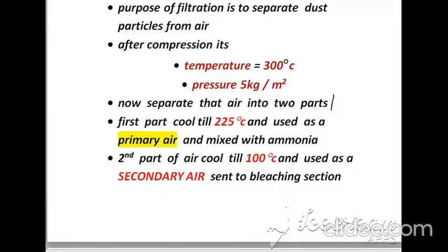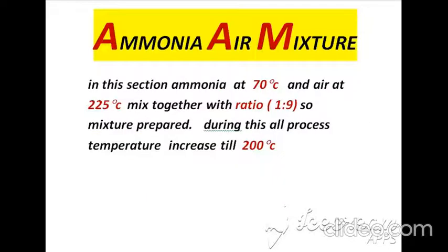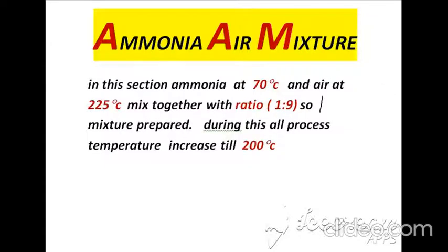After converting liquid ammonia into vapors, it is ready to mix with air and is sent to the ammonia-air mixing section. In this section, ammonia at 70°C and air at 2 to 5°C are mixed together in a ratio of 1:9. During this process, temperature increases to 200°C and that mixture is sent to the next section.